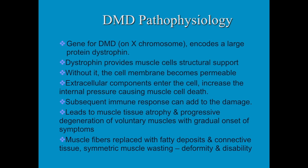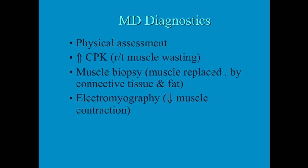They become deformed and eventually have profound disability. Diagnostics include a full physical assessment, which is where the musculoskeletal assessment is very important — comparing side to side, uppers and lowers, to assess strength and voluntary movement. Labs include CPK, because with muscle wasting CPK is released and will be at very high levels.